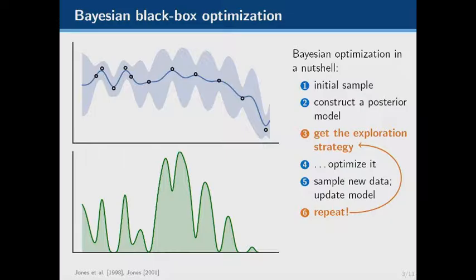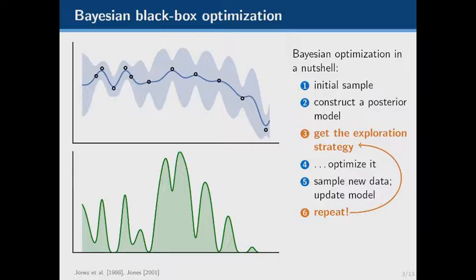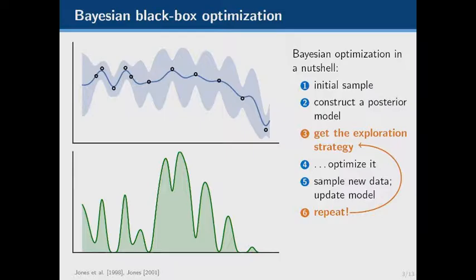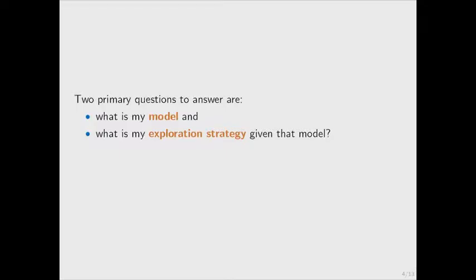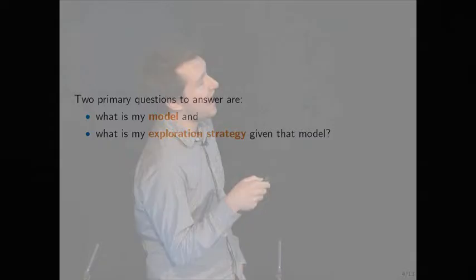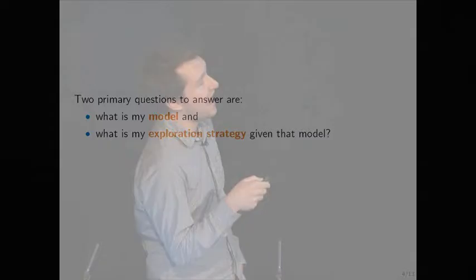I repeat this process over and over until some convergence criterion or until I've reached a maximum number of iterations, and then return a recommendation of the best possible point. This is Bayesian optimization in a nutshell, but there are two key design choices: first, what model do I use — what is the prediction mechanism? And second, given that model, what is my exploration strategy — what is the acquisition function I'm going to use to decide where to look next?